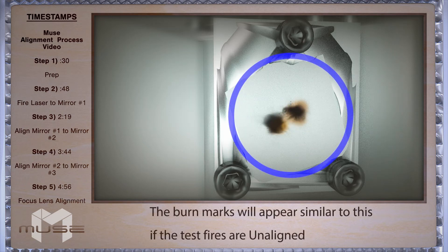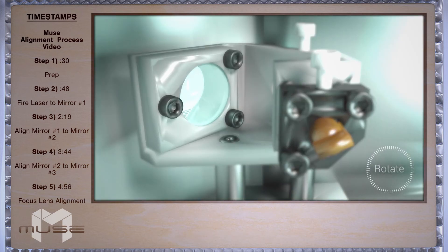If they are apart then you'll need to adjust mirror one. Remember that this is different from the red dot diode. This actually has a mirror.